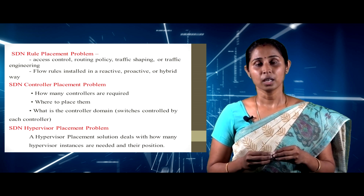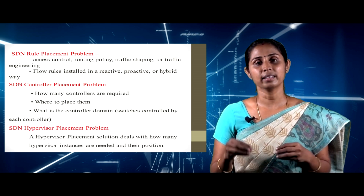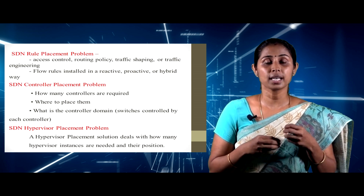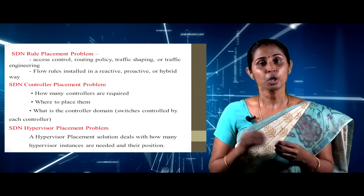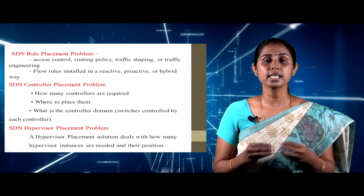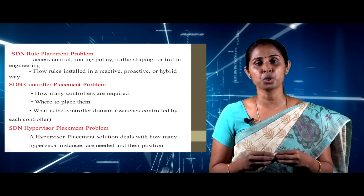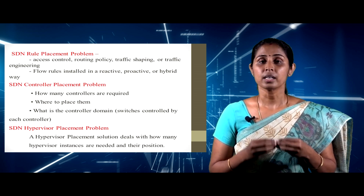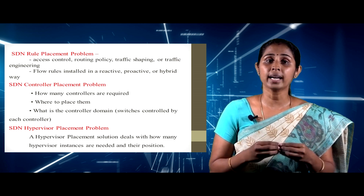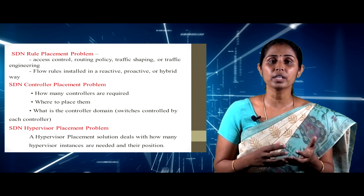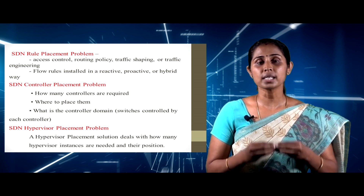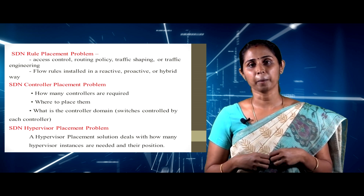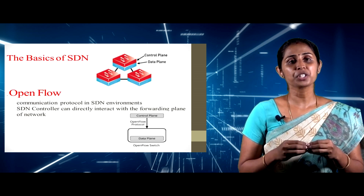Rule placement solution deals with which rules must be deployed in the network and where. What are the different types of rules — for access control, routing policies, traffic shaping, or traffic engineering such as rules for load balancing? How to make real-time decisions, how to handle rule conflicts or policies, and whether flow rules are installed in a reactive, proactive, or hybrid way.